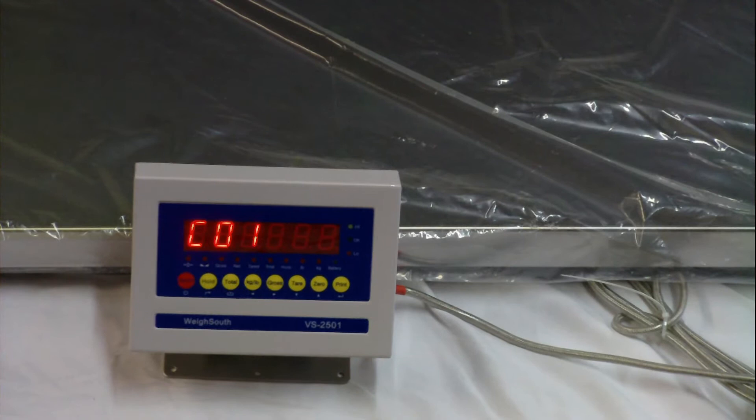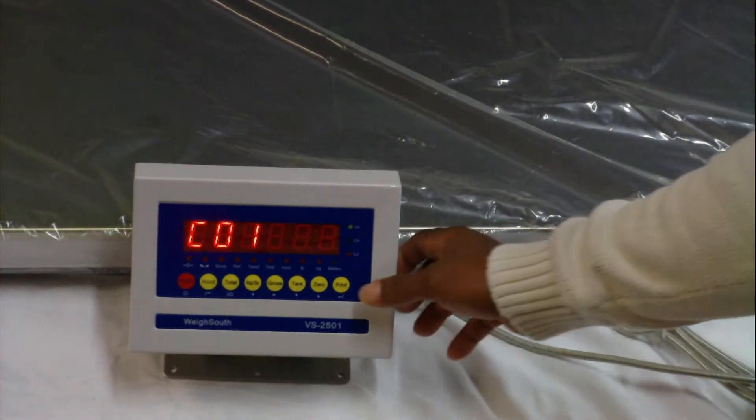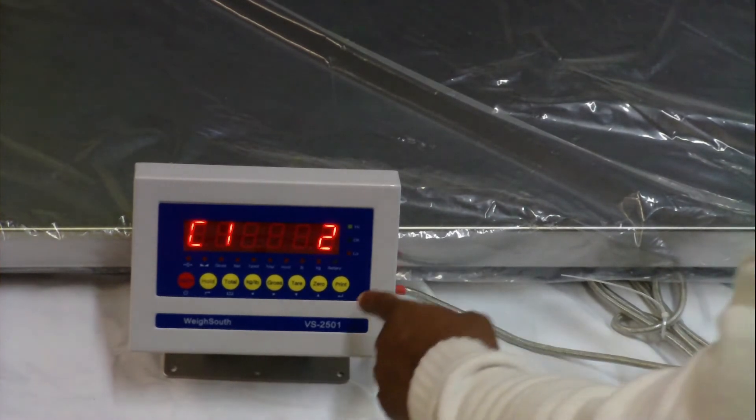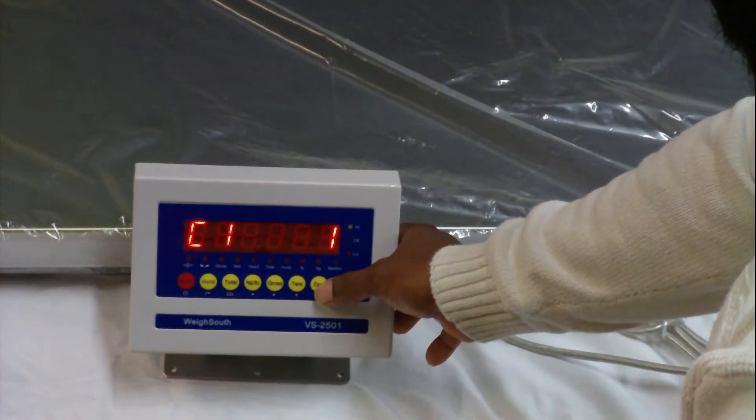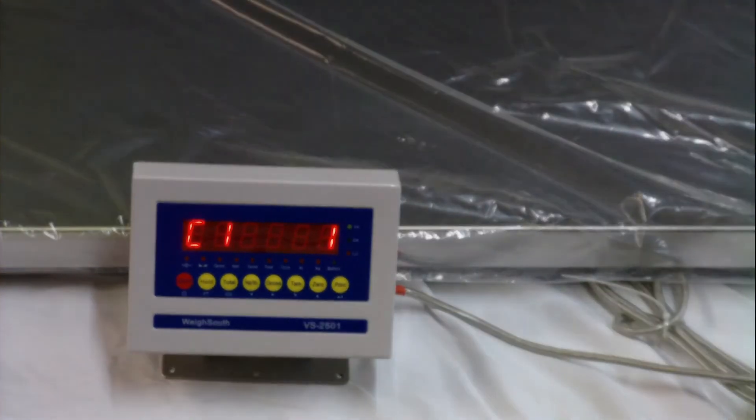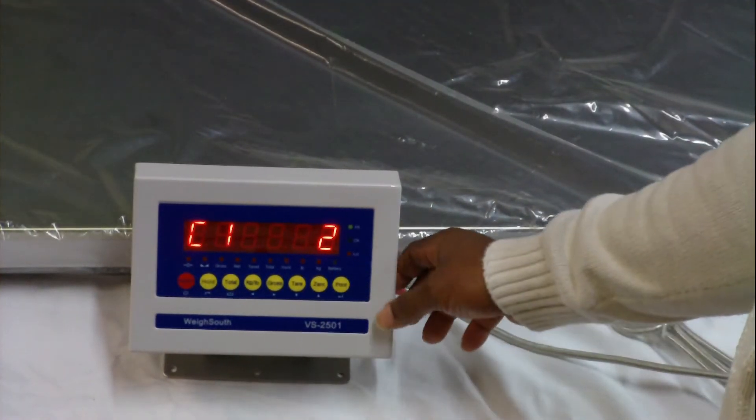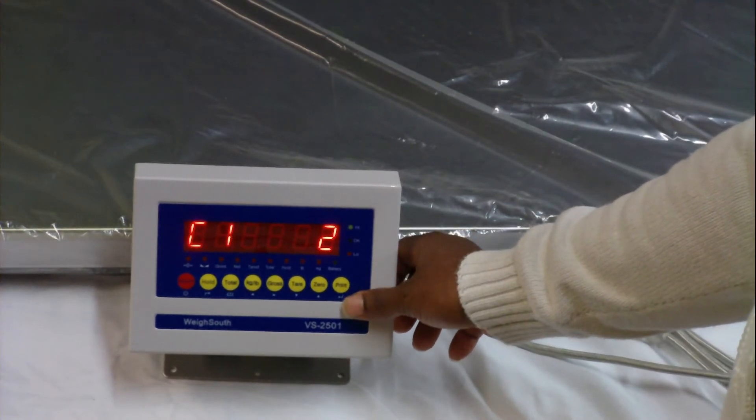To enter the C function, press the print key. You now see the display change to show C1 function submenu of 2. You can change the C submenu by pressing the zero key. When the appropriate C submenu is selected, exit the C submenu and proceed to the next function by pressing the print key.